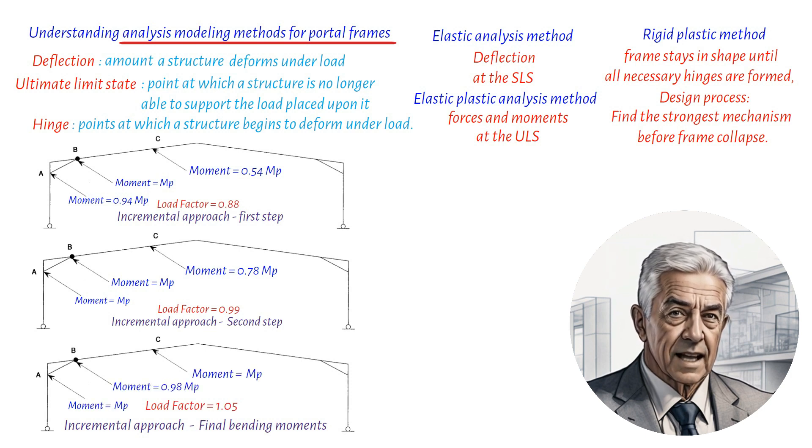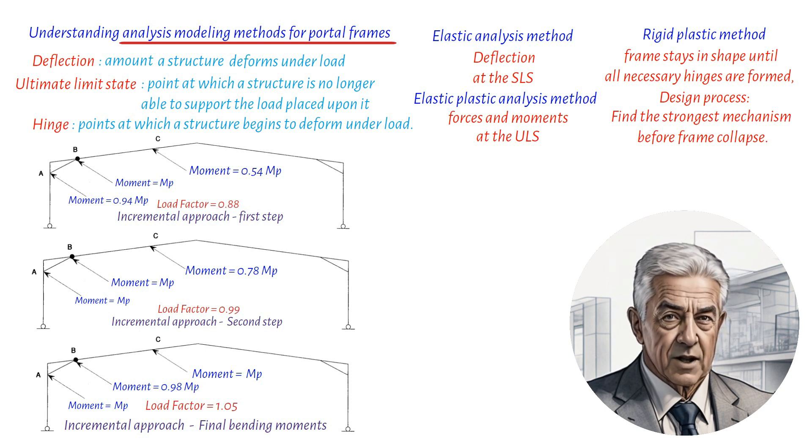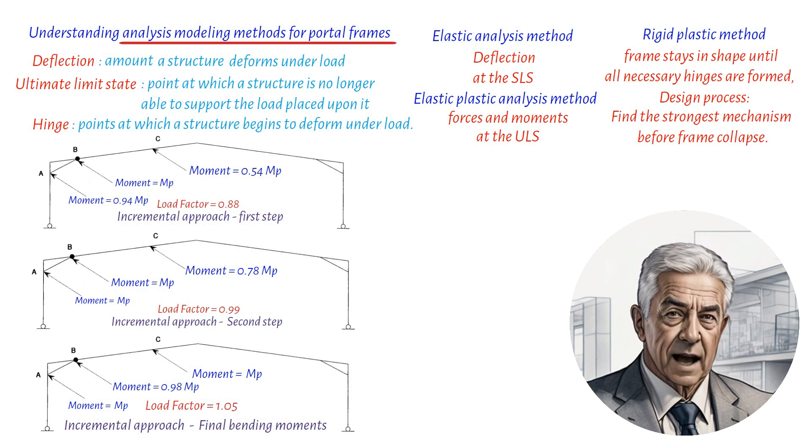Finally, elastic plastic analysis programs have replaced rigid plastic ones because they allow for more accurate determination of the bending moment diagram at any load factor, not just at collapse. The elastic plastic method is also better at finding the critical collapse mechanism and has a more complete hinge formation history compared to the rigid plastic method, which only takes into account the hinges that exist at collapse.